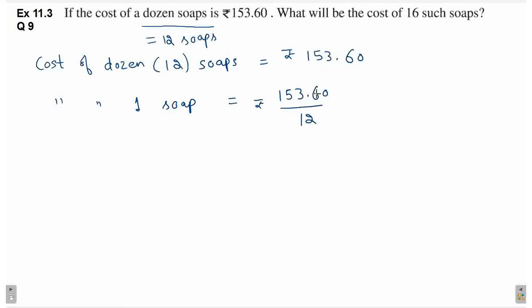Ab hum is ko yahin par bhi thoda simplify kar saktay hai, ya phir jab aap 16 soaps ki cost nikaal hoge, waha par bhi simplify kar saktay ho. Mein is ko yahin par simplify kar dunggi. Pahle mein is ka decimal remove kar dunggi. This will be 15,360 divided by 100.